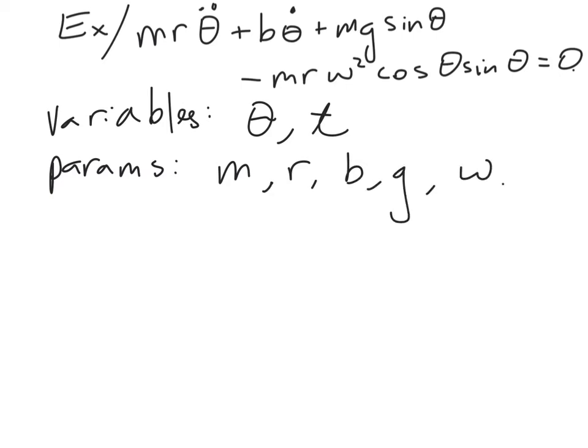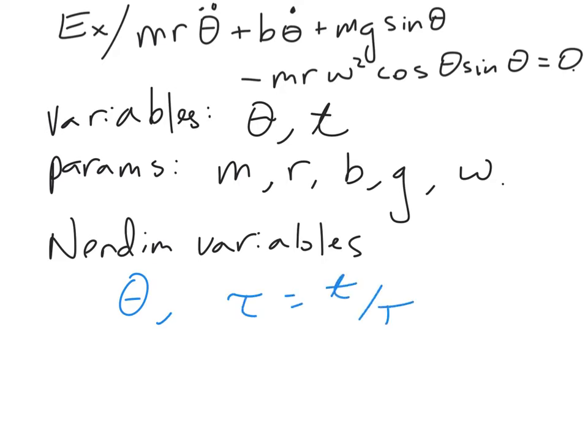And I want to note that theta is already nondimensional, so when we create nondimensional variables, which is the first thing we do, we're going to get theta, and tau equals t over T, which implies t equals tau T, and we're going to go ahead and plug that in.